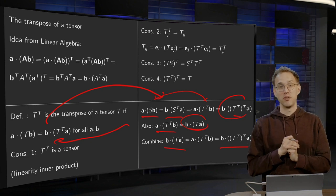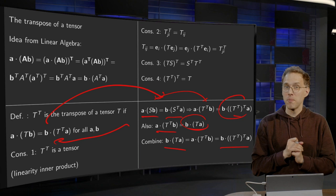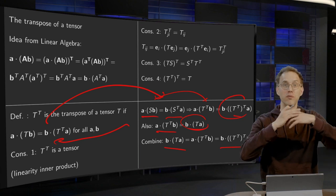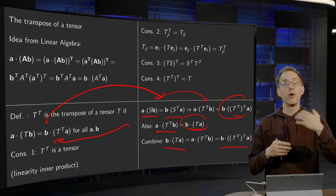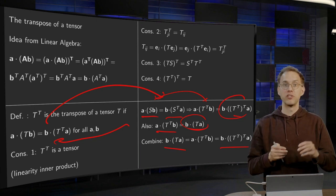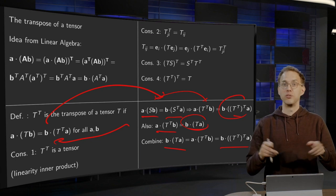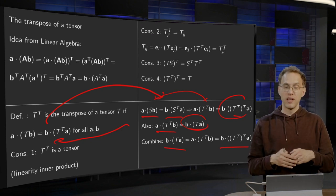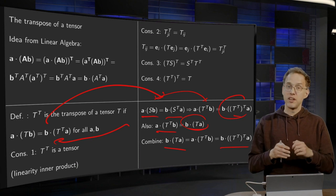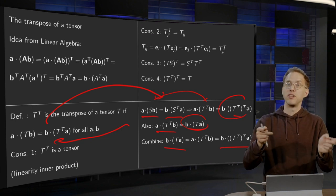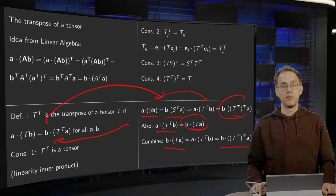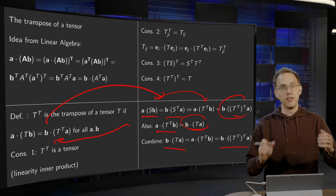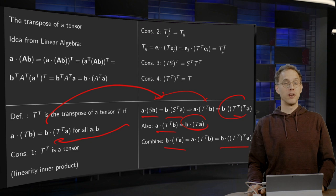The definition of the transpose of a tensor looks a bit odd because we do not want to rely on coordinates. However, all the normal rules hold: if you have the matrix representation, you just interchange rows and columns; taking a product means inverting order and taking transposes; and taking a transpose twice gives you the original tensor back. The definition may look odd, but all our normal rules apply.